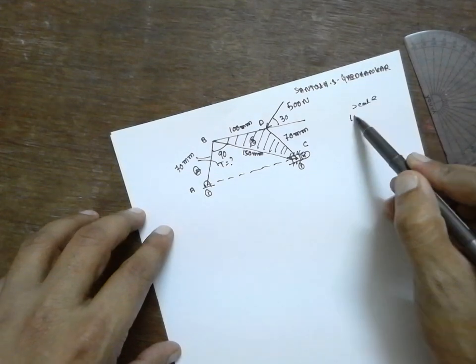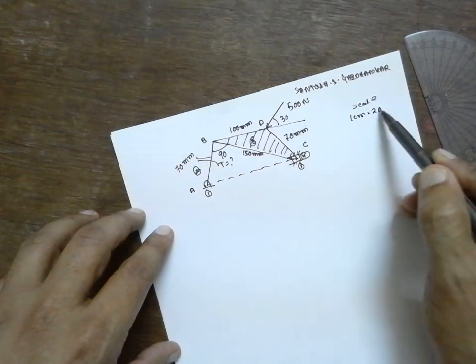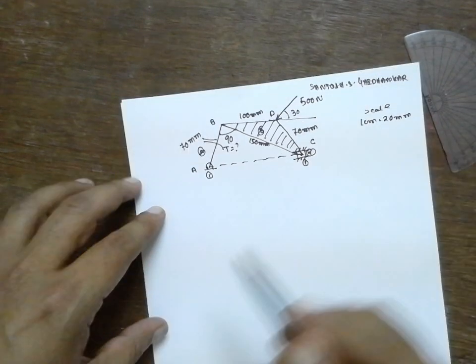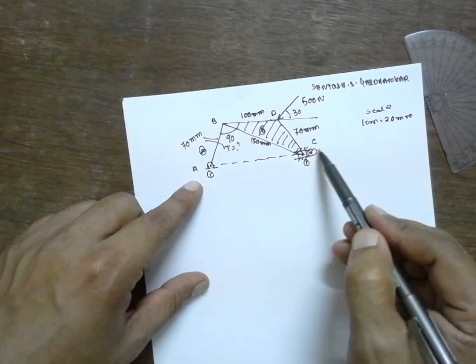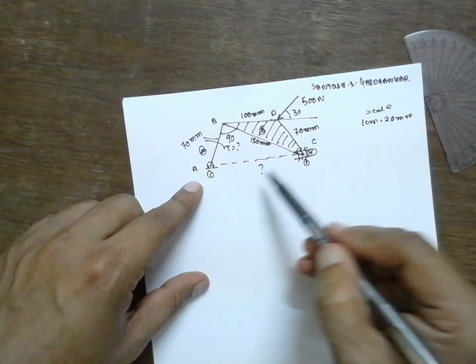Now, here in this problem, we don't know the distance AC. This is the question. How to find out this AC by using right triangle, right angle triangle.